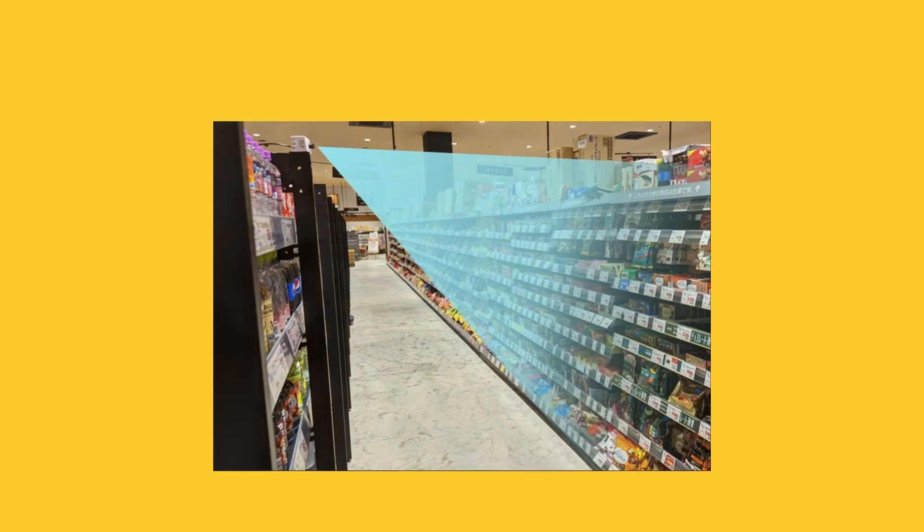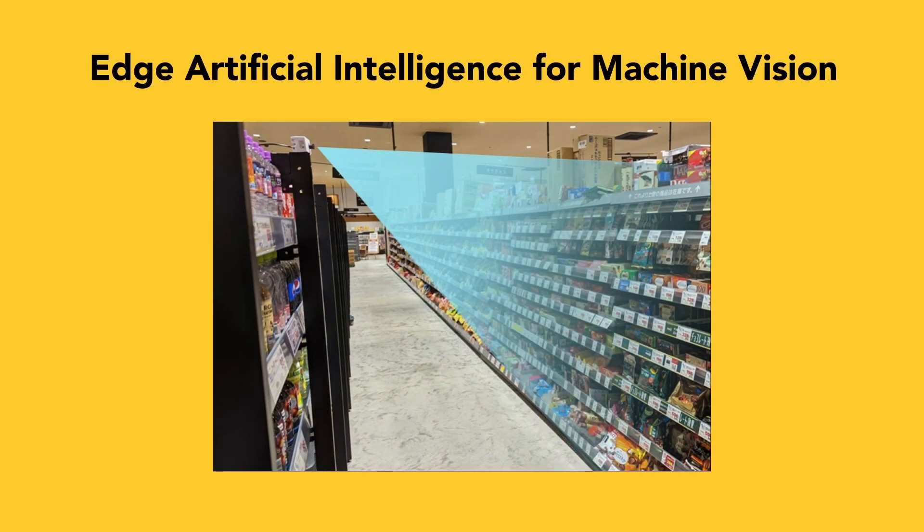The first trend is edge AI, or edge artificial intelligence. This is a type of AI where all the computation happens at the edges or fringes of the network — all the devices on the periphery. This is optimal because it allows a much lower amount of data to be sent back and forth between devices and the centralized unit.